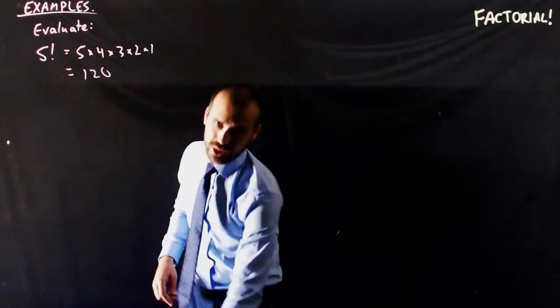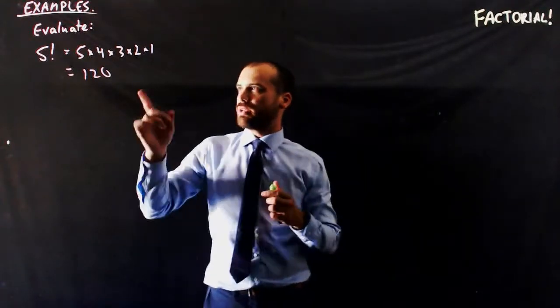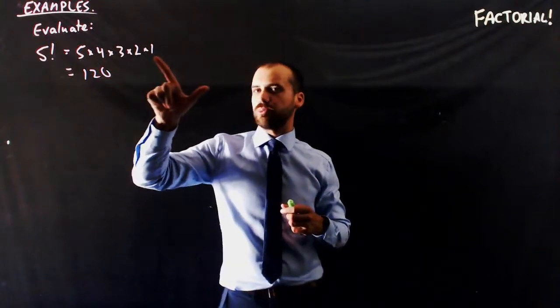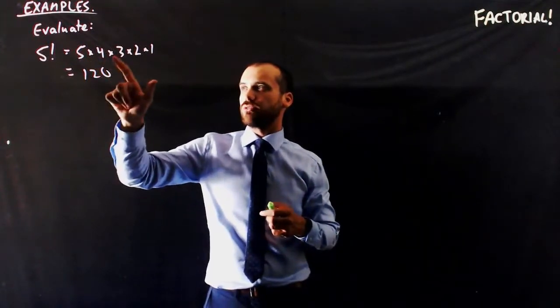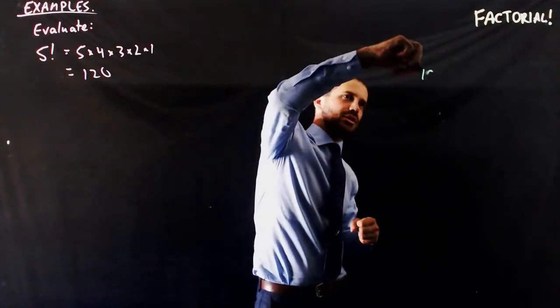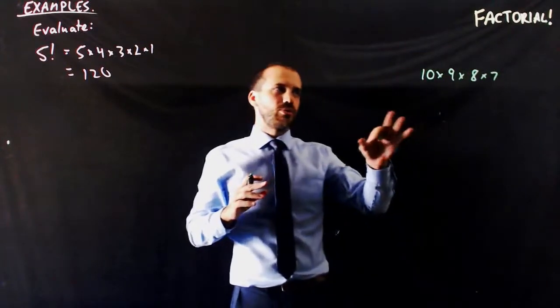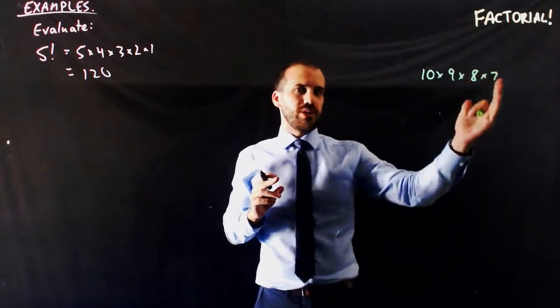Now, in some previous questions that we've done, you might be already thinking, wait a minute, sometimes I don't need to multiply all the way from 5, 4, 3, 2, 1. Sometimes the calculation I want to do is just like 10 times 9 times 8 times 7. So what do I do when I want to stop there?